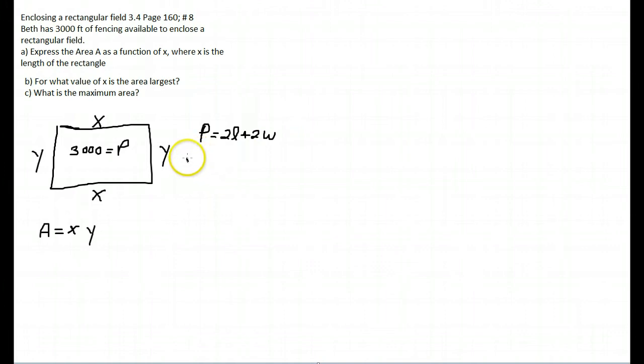Our perimeter is 3,000, so 3,000 equals our length, which is X, so 2X plus 2Y.